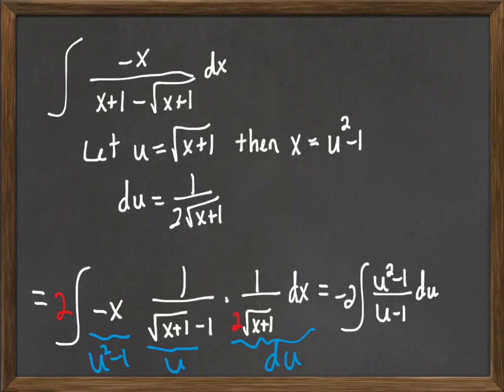Now I have u squared minus 1 over u minus 1. So I can divide that out. And I'm going to have negative 2 times the integral. Well, u squared minus 1 over u minus 1 is just going to be u plus 1.